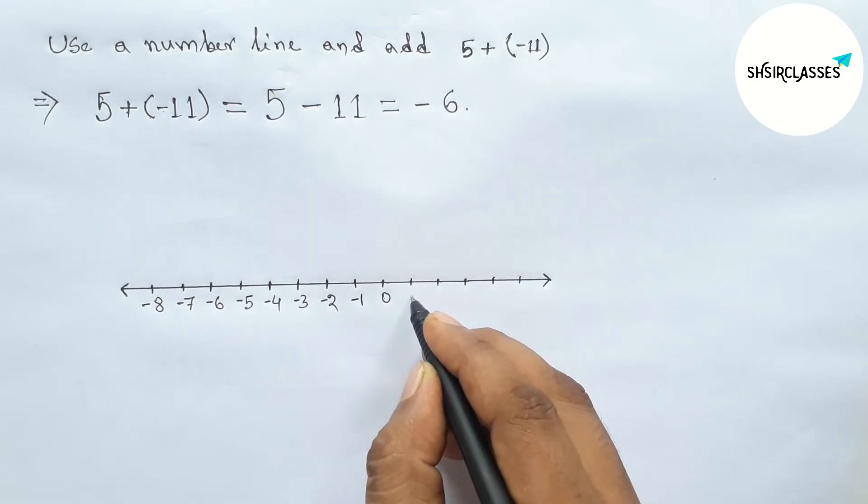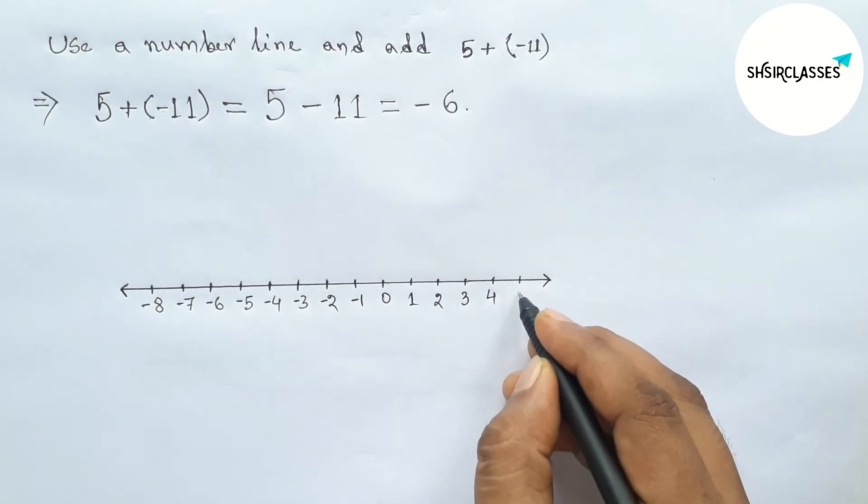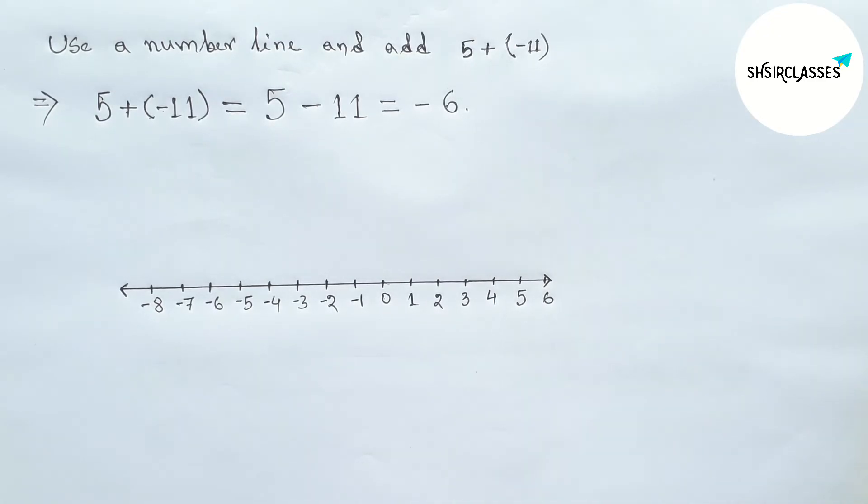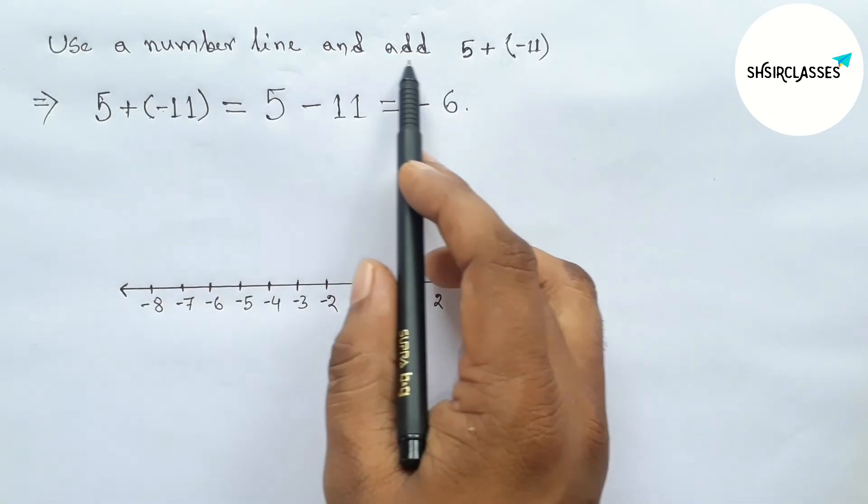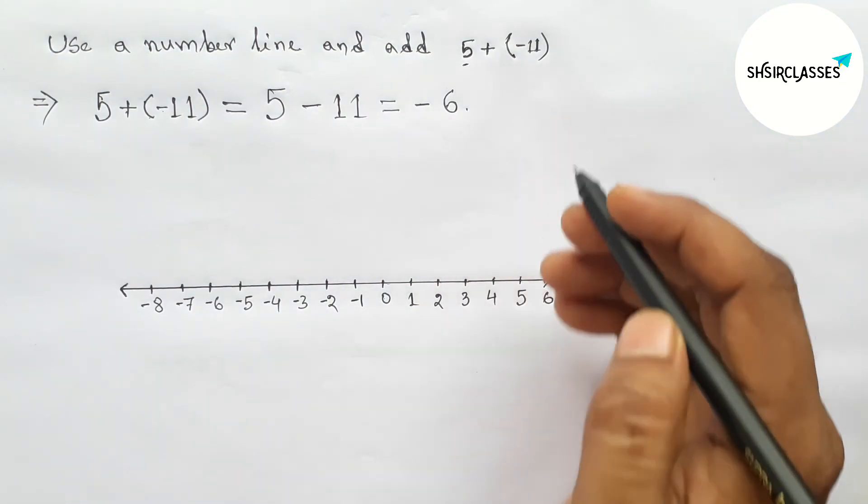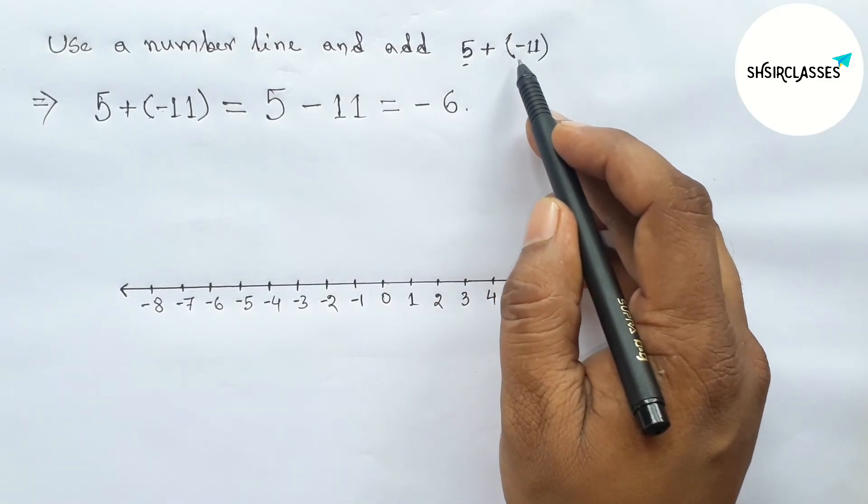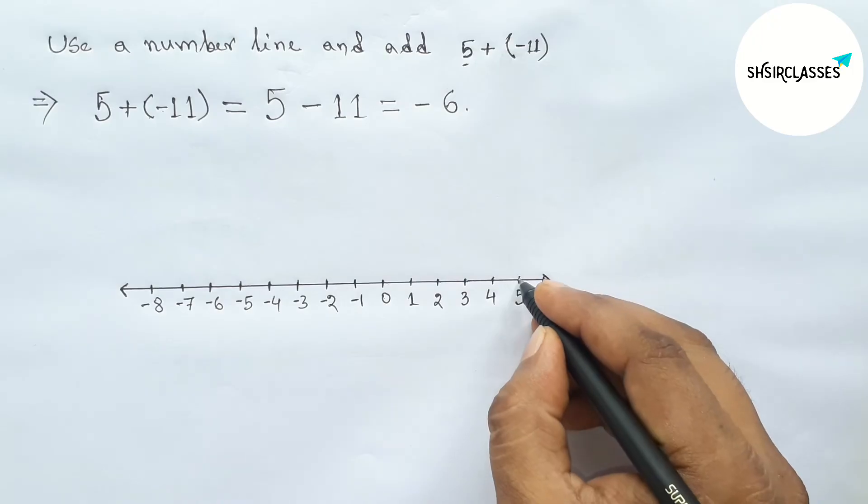Next, use a number line and adding 5 plus minus 11. So from first taking 5, so here 5, then subtracting minus 11. So subtracting 11, so first counting here minus 1, then minus 2, minus 3, minus 4, minus 5, minus 6, minus 7, minus 8, minus 9, minus 10, minus 11.